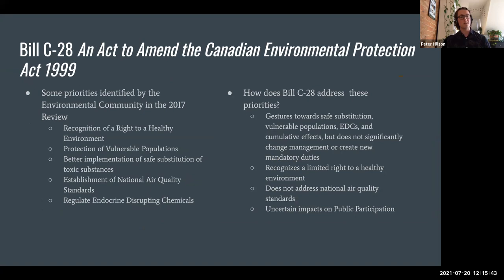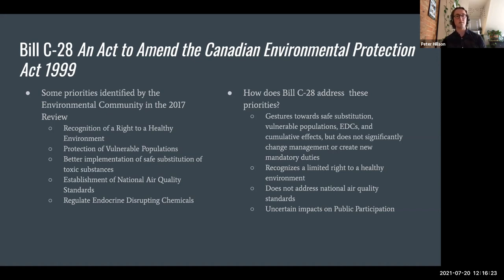Some priorities identified by the environmental community in the consultation that went into the 2017 review include: recognition of a right to a healthy environment, greater protection of vulnerable populations, better implementation of safe substitution for toxic substances, establishment of national air quality standards, and better regulation of endocrine disrupting chemicals. These are several thematic areas of special concern that the environmental community was really hoping the government might integrate into its reforms to CEPA. So how does Bill C-28 address those priorities?